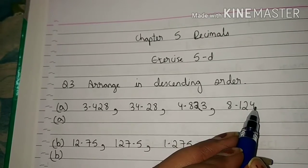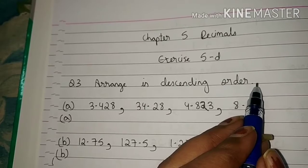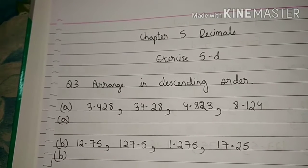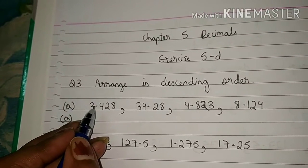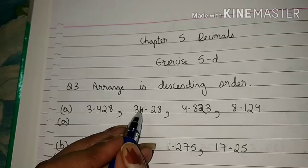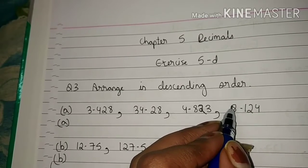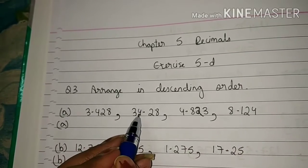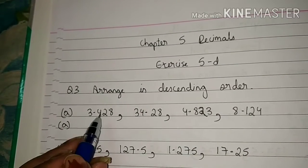First of all, you will ignore the numbers which are after the decimal point and compare the numbers which are before the decimal point. You can see here before the decimal point the number is 3. Here before the decimal point the number is 34. Here before the decimal point the number is 4. Here before the decimal point the number is 8. So which is the greatest number? 34. So 34.28 is the greatest number among all the other numbers.